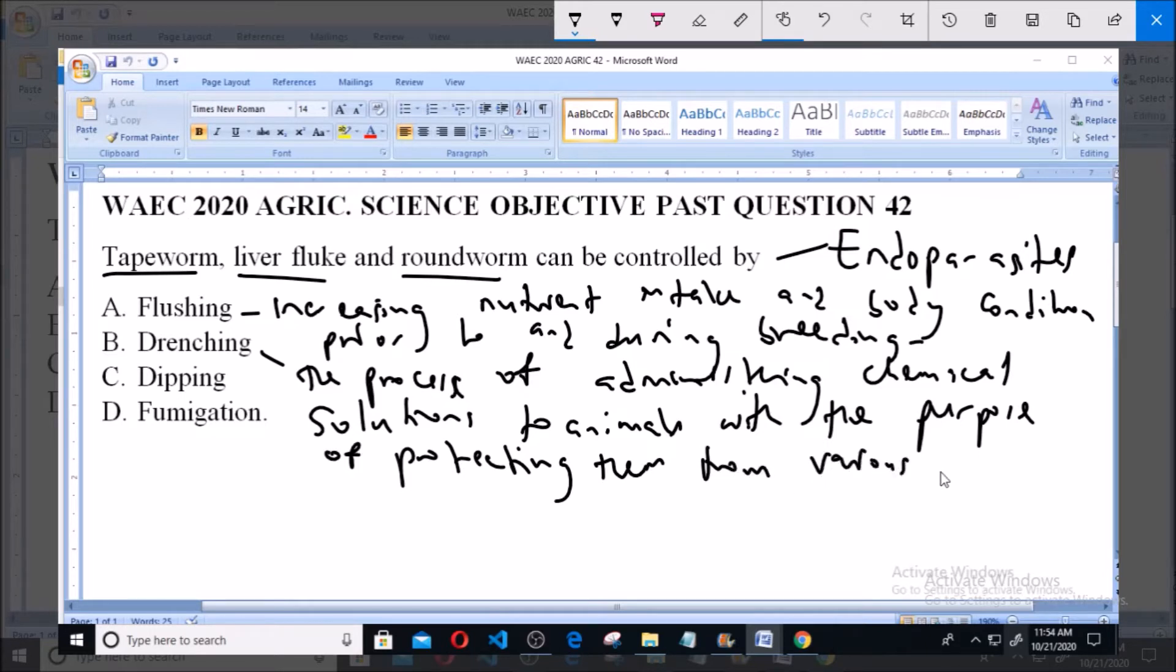Now option C says dipping. Dipping is the process of immersing animals in mixture of chemicals to control ectoparasites.